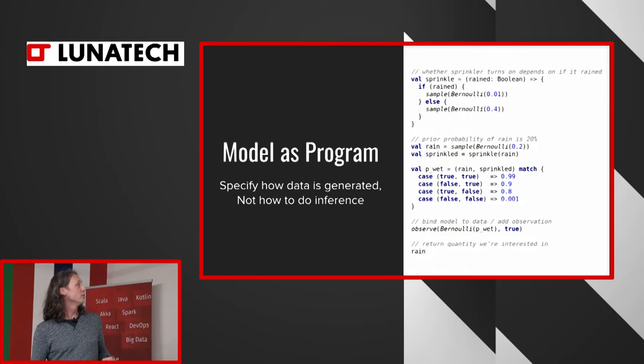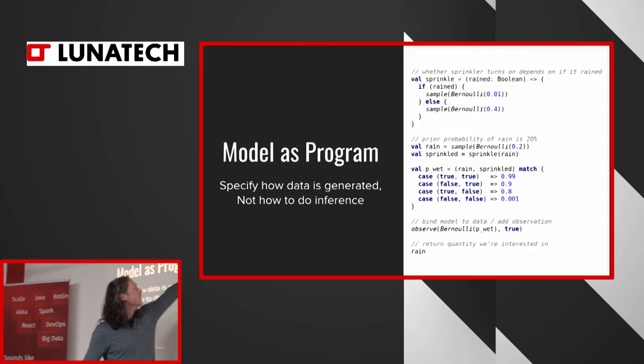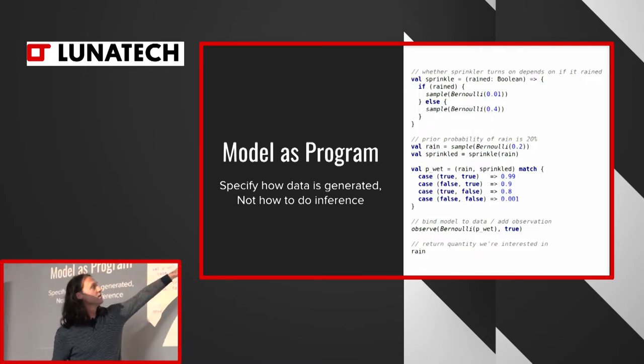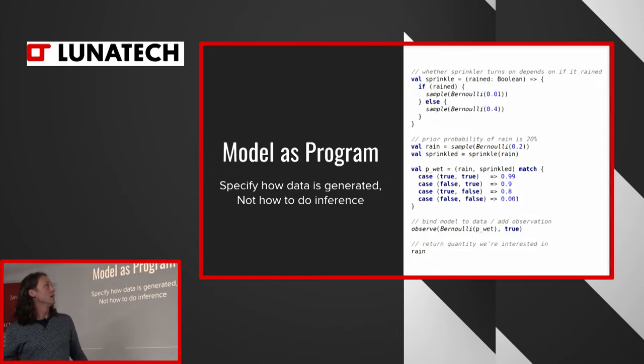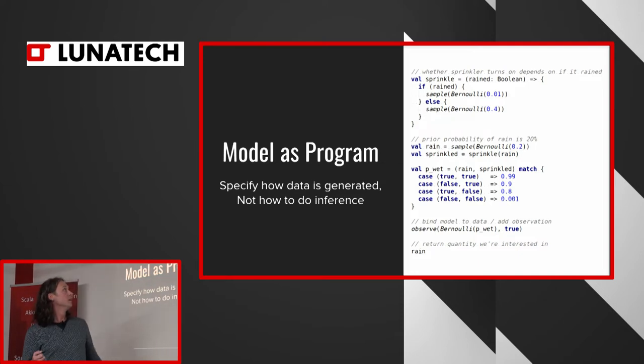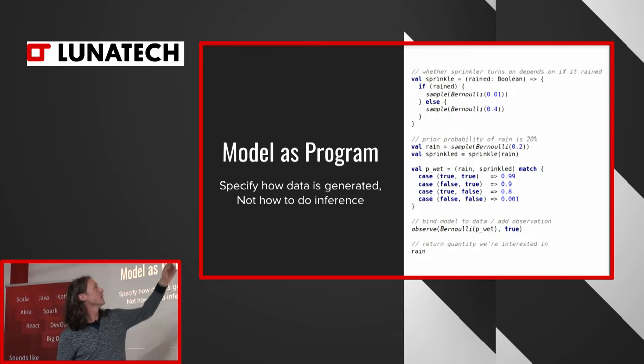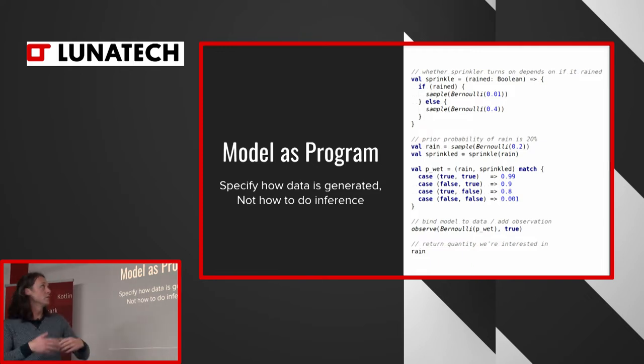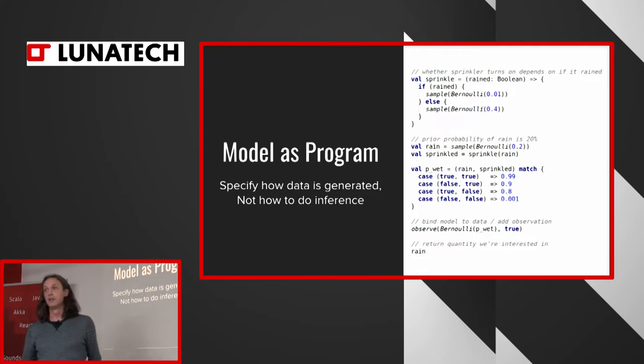As you can see here, I actually sample from a Bernoulli distribution. This is just a binary distribution that is true for 20% of the time, false for 80% of the time. And I get a boolean back whether it rained or not. Then I sample from the sprinkler. So if it rains, then there's a 1% probability that the sprinkler actually went off. If it didn't rain, there's a 40% probability. So again, you get a boolean whether the sprinkler went off.